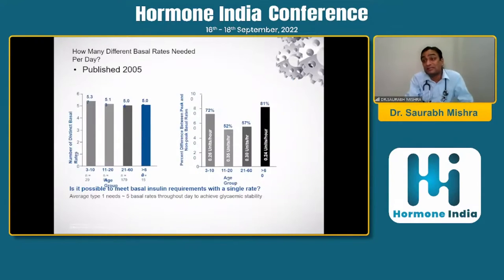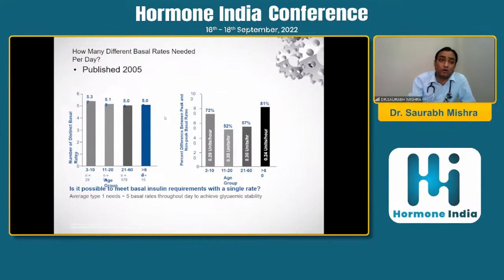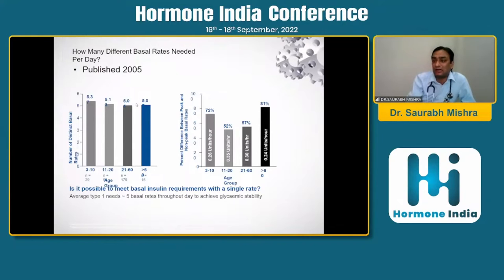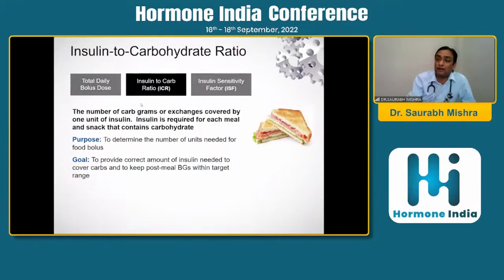Research published in 2005 showed that basal insulin requirements can be met with a single rate or multiple basal rates — approximately five basal rates are typically used. I suggest adjusting for hypoglycemia due to exercise, dawn phenomenon, late-night meals, or late-night waking, where flexibility of basal rate reduction can prevent hypoglycemia.